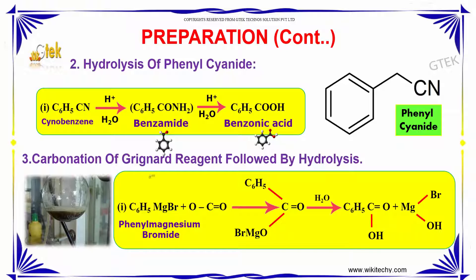We will now discuss the carbonation of the Grignard reagent followed by hydrolysis. Phenyl magnesium bromide, when reacting with CO2 (carbon dioxide), gives an intermediate product, which on further reaction with water yields benzoic acid.